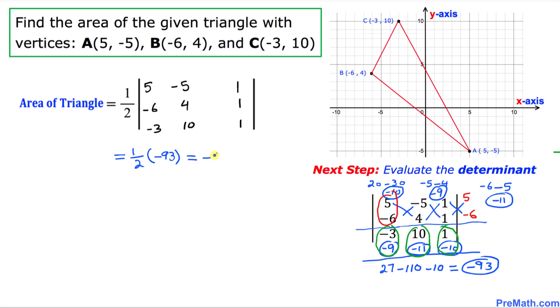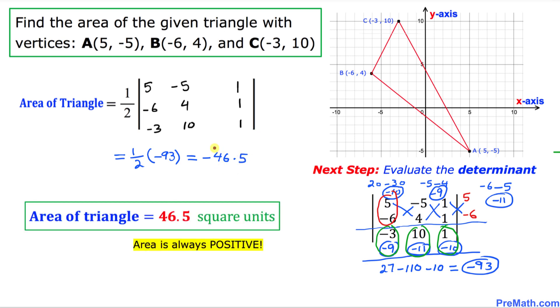And if we simplify it, that is going to give us negative 46.5. And we know that the area must always be positive, so this quantity becomes positive. So our area turns out to be positive 46.5 square units. And that is our answer.